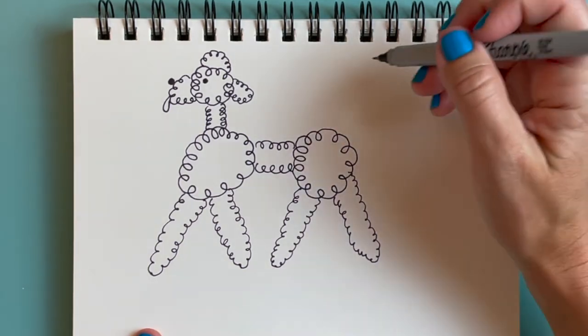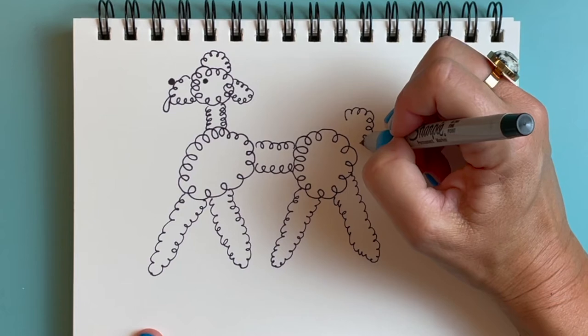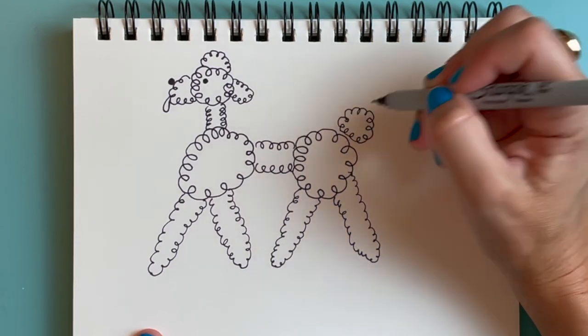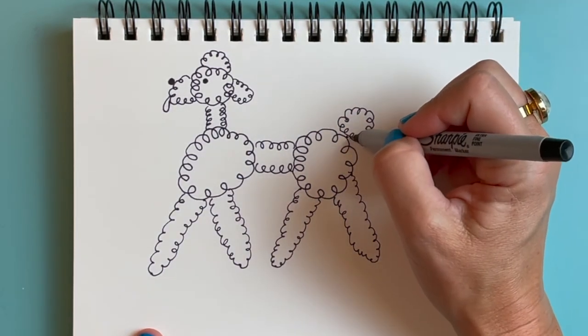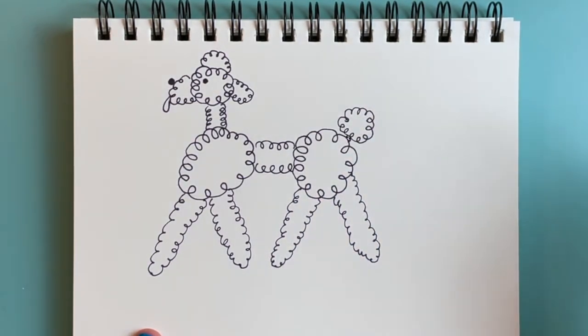And lastly we need a little tail over here. So I'm going to draw another little curly poof of a circle. And little curls here and there to attach our tail to our backside.